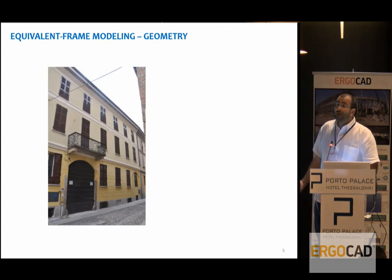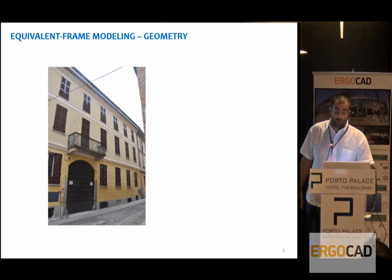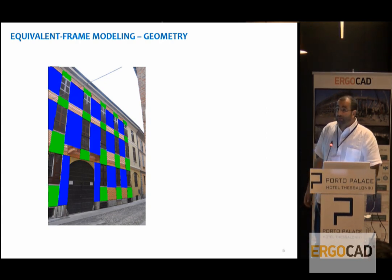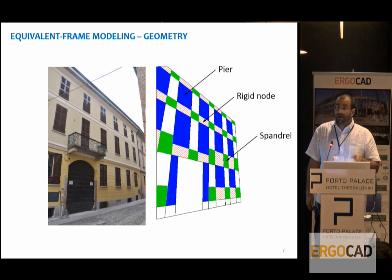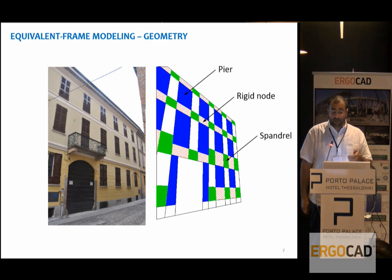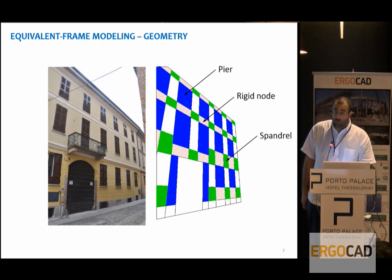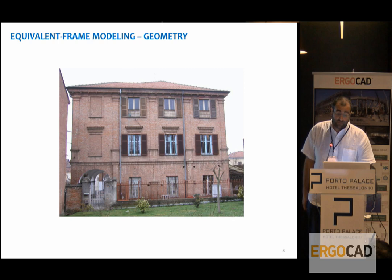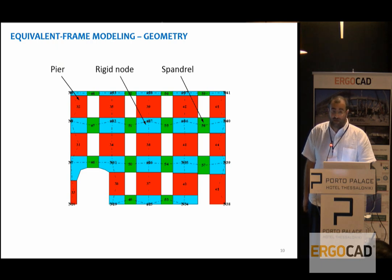A justification for selecting our frame geometry can come from simple geometric observations on the layout of the walls. We can easily find where our piers and spandrels are: piers are portions of masonry between openings aligned horizontally, spandrels are between openings aligned vertically, and nodes are the remaining portions. This is straightforward when the geometry is quite regular. Here is another example where we can easily identify piers, spandrels, and rigid nodes.